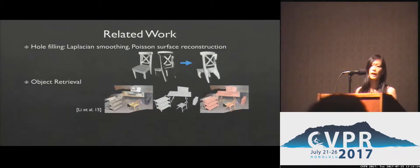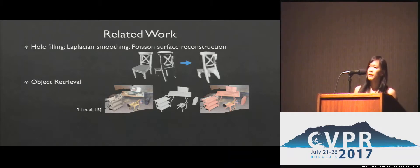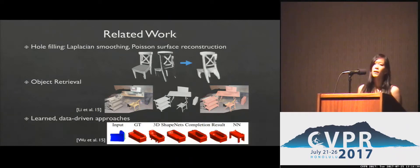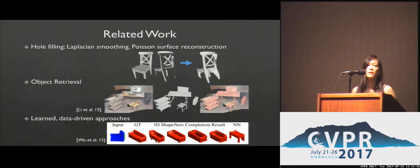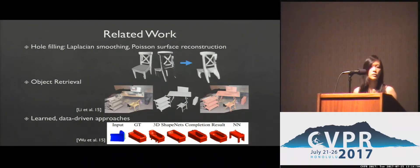Another approach towards scan completion is object retrieval, replacing the objects in a scan with similar CAD models from a database. But this relies on having a database of very similar models to the objects being scanned. Recently, there have been early CNN approaches for 3D objects, like 3D ShapeNets from Wu et al. They explore a variety of tasks like classification and retrieval, but their deep belief network can also be used for basic shape completion tasks.